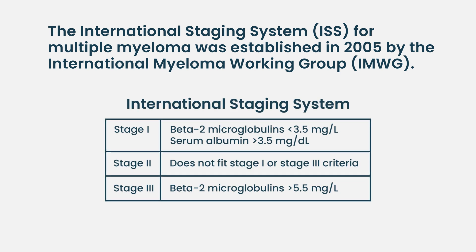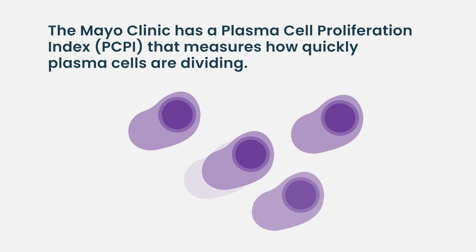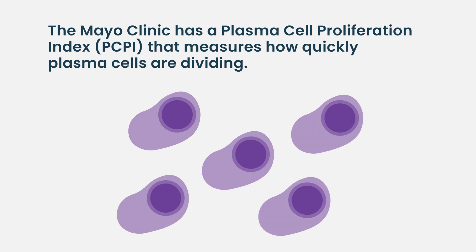Our original ISS staging system was based on those things — like beta-2-microglobulin. Later, we included LDH, which is a marker of cell turnover. Mayo Clinic also had a proliferation index that they would look at, which measured sort of the same idea.